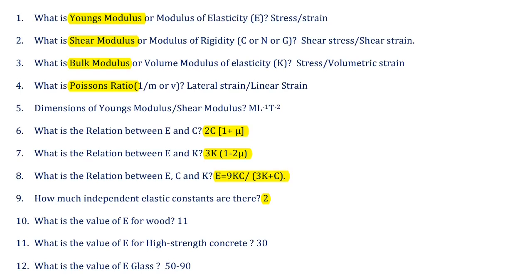Second question: what is Shear modulus? Shear modulus is nothing but the ratio of shear stress to shear strain, and it is denoted by the symbol C, N, or G. Generally, C is used for shear modulus and G is used for modulus of rigidity. Shear modulus is also known as modulus of rigidity and has the same units as Young's modulus.